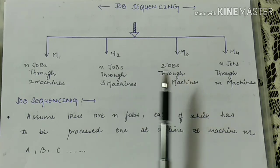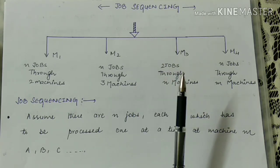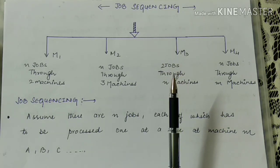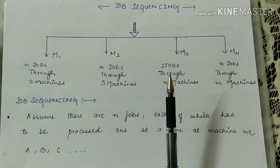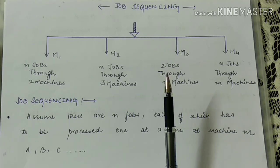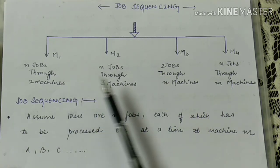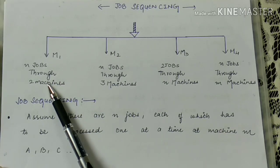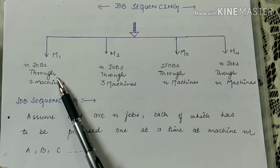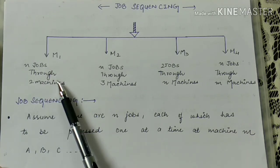By the name, what we mean is: job is the task and sequencing is the order in which a particular task is performed. This chapter is related to the sequencing — the ordering of tasks to be done on a machine. I have divided the chapter into four forms or four methods. The first method I am going to discuss today is the M1 method, which covers questions related to N jobs through two machines.